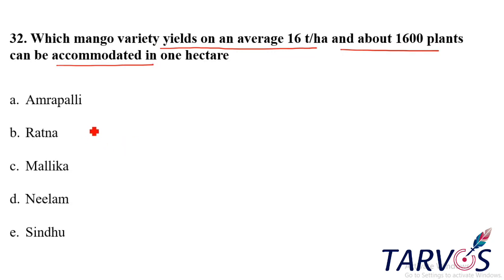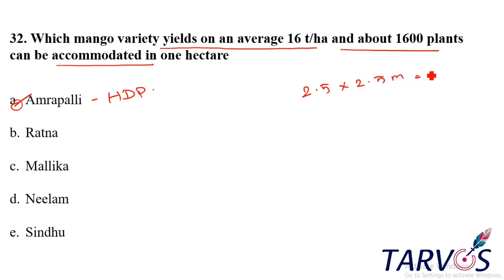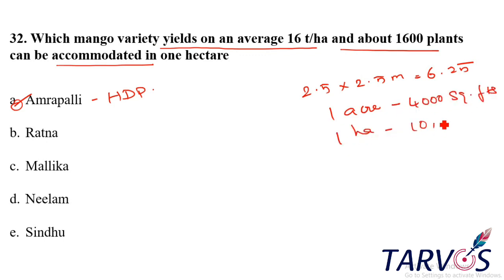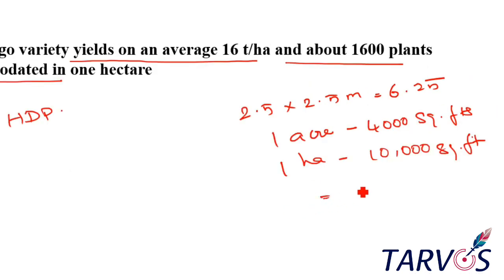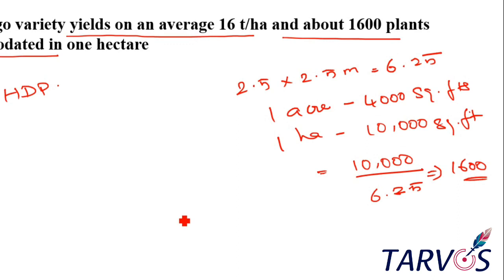What variety is used for it? Normally it's Amarapali. This is a suitable variety. How do you calculate the spacing? The spacing is 2.5 into 2.5 meters, which is 6.25 square meters. One hectare is 10,000 square meters. The total area of a hectare divided by the spacing of 6.25 meters gives 1,600 plants. The formula is: area divided by spacing.